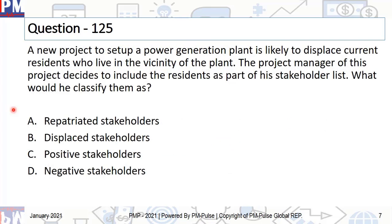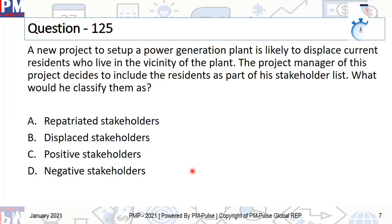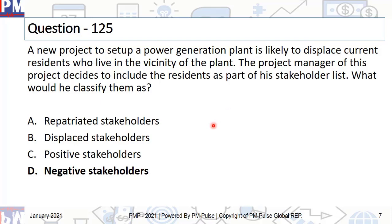Let's move on to question number 125. The correct answer is negative stakeholders. We're looking at a power generation plant that is going to displace certain residents in the local vicinity. Even if they are compensated, they will look at it negatively — they would prefer the power generation unit did not come up. They might go for a civil suit, look at a political angle to stop it, or organize a protest rally. You have to look at them as negative stakeholders.